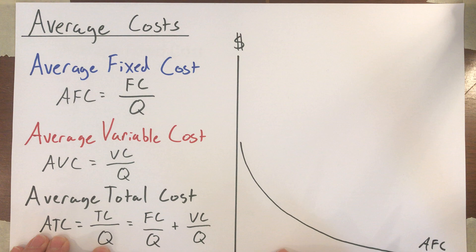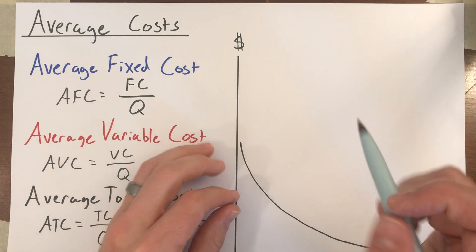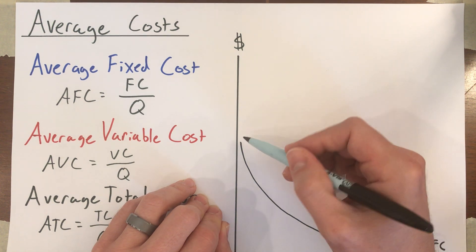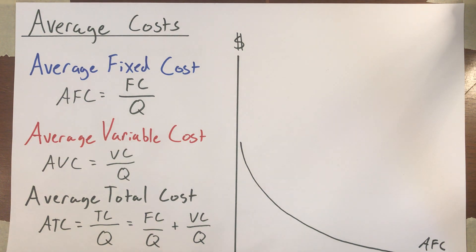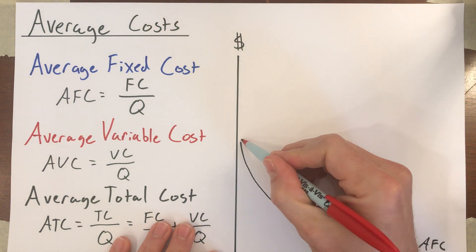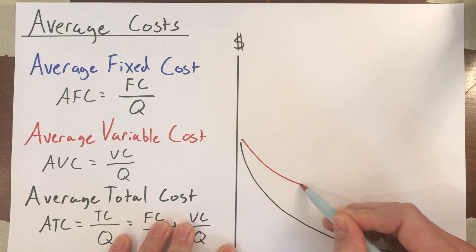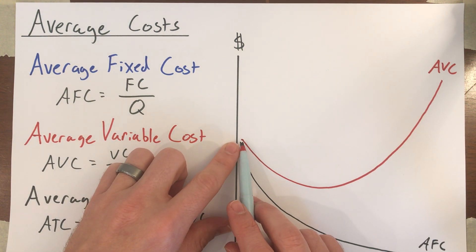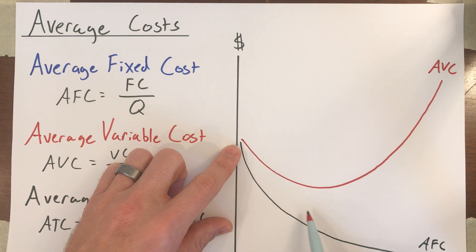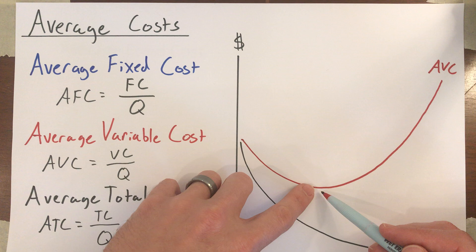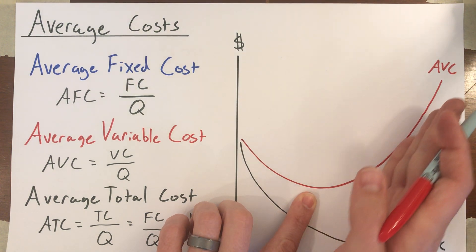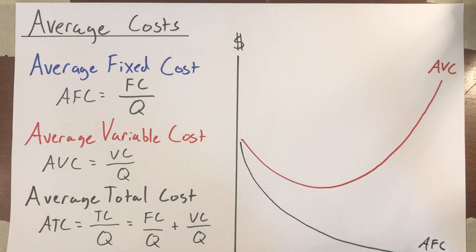Average variable cost depends on whether your marginal cost curve is U-shaped. I'm going to assume that it is U-shaped, and it starts at about the same level as average fixed cost — it's going to be a U-shaped curve. The reason for that is: as those marginal costs fall, they start pulling the average variable cost down. As the marginal costs come back up, they keep pulling average variable cost up until marginal cost crosses over and equals average variable cost. Then as marginal cost climbs, it starts pulling the average variable cost up. So average variable cost is generally going to be U-shaped.